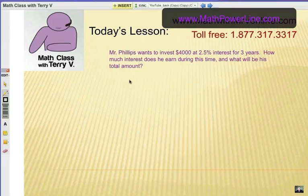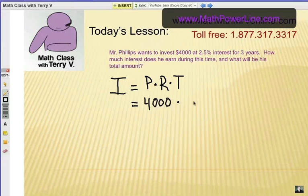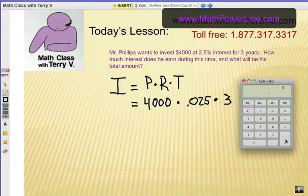Let's go ahead and look at another example. Mr. Phillips wants to invest $4,000 at 2.5% interest for 3 years. How much interest does he earn during this time and what will be his total amount? So first of all, we need to find interest. Remember that's P times R times T. What's the principal? $4,000. What is the rate? 2.5%. Remember that's .025. And what's the time in years? It would be 3. So simple multiplication.